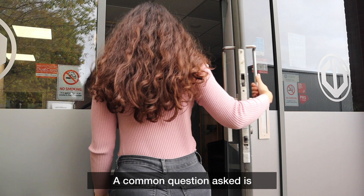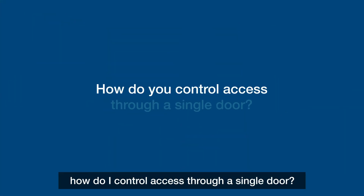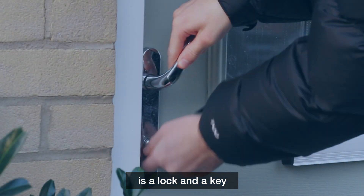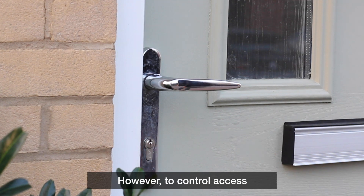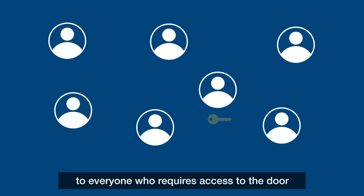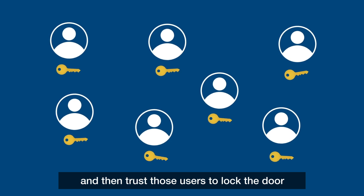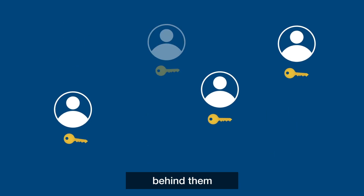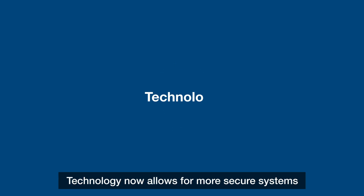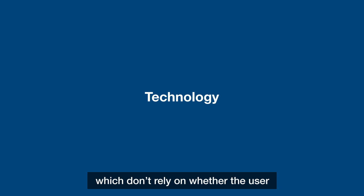A common question asked is: how do I control access through a single door? The easiest and most basic form of restricting access is a lock and a key. However, to control access you would need to issue a key to everyone who requires access to the door and then trust those users to lock the door behind them. If someone then lost a key, the locks would need to be changed. Technology now allows for more secure systems which don't rely on whether the user will remember to lock the door or not.